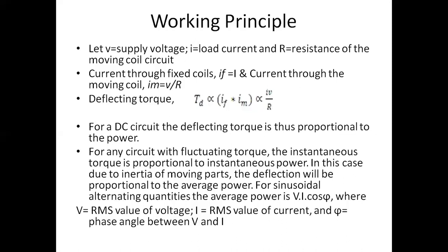The instantaneous power is given by P equal to VI for any circuit. The instantaneous torque is proportional to instantaneous power. Due to the inertia of the moving parts, the deflection will be proportional to the average power. For sinusoidal alternating quantities, the average power is VI cos phi, where V is the RMS value of voltage, I is the RMS value of current, and phi is the phase angle between voltage and current.